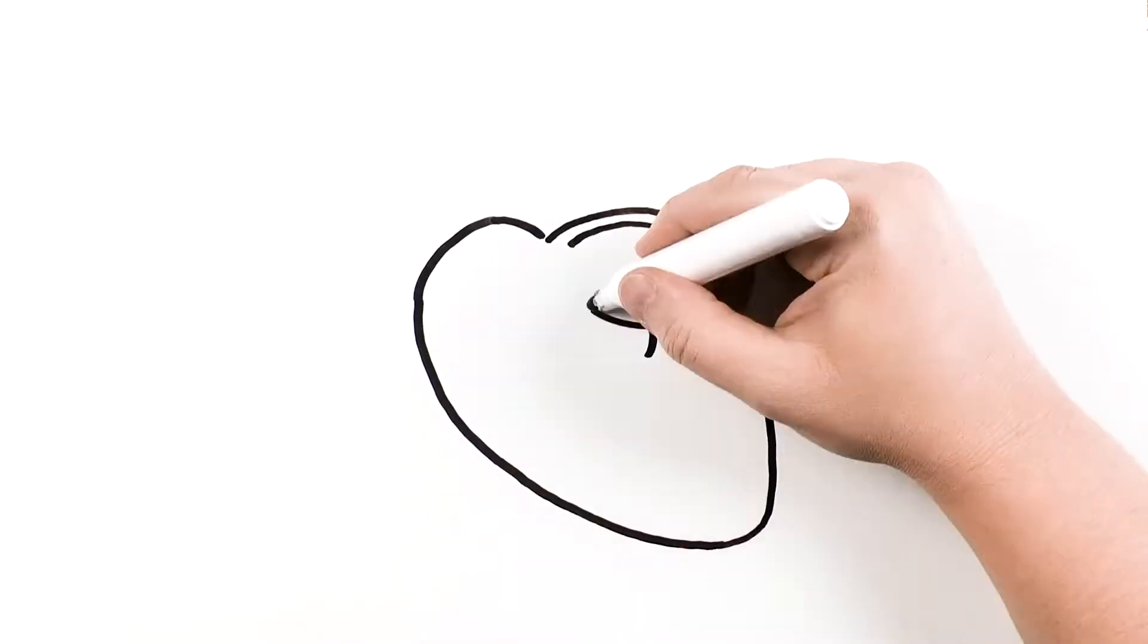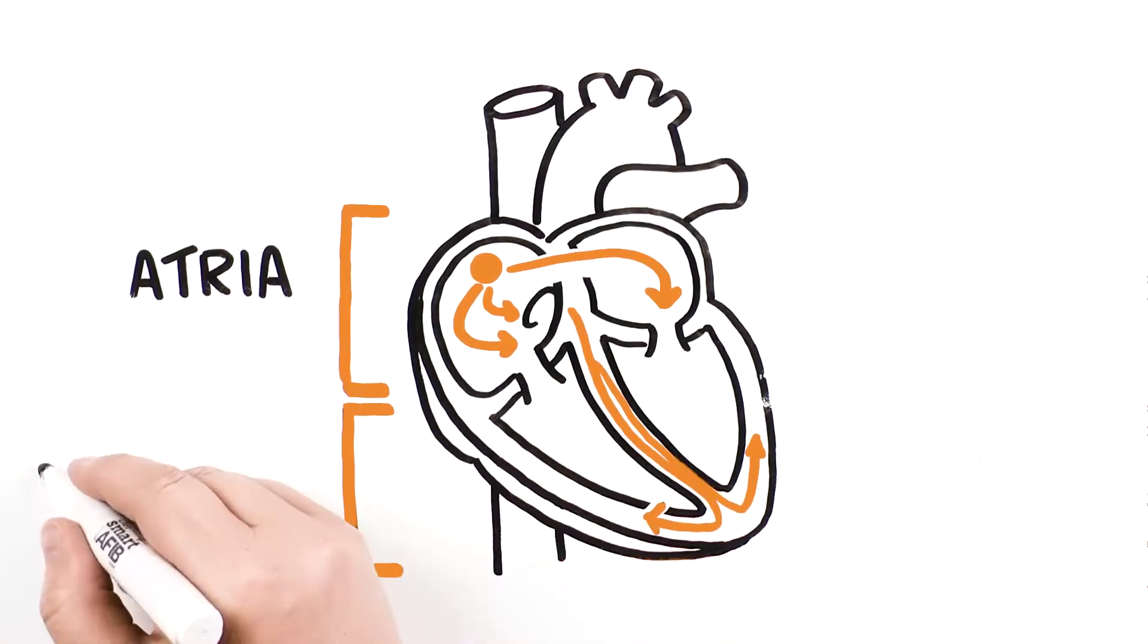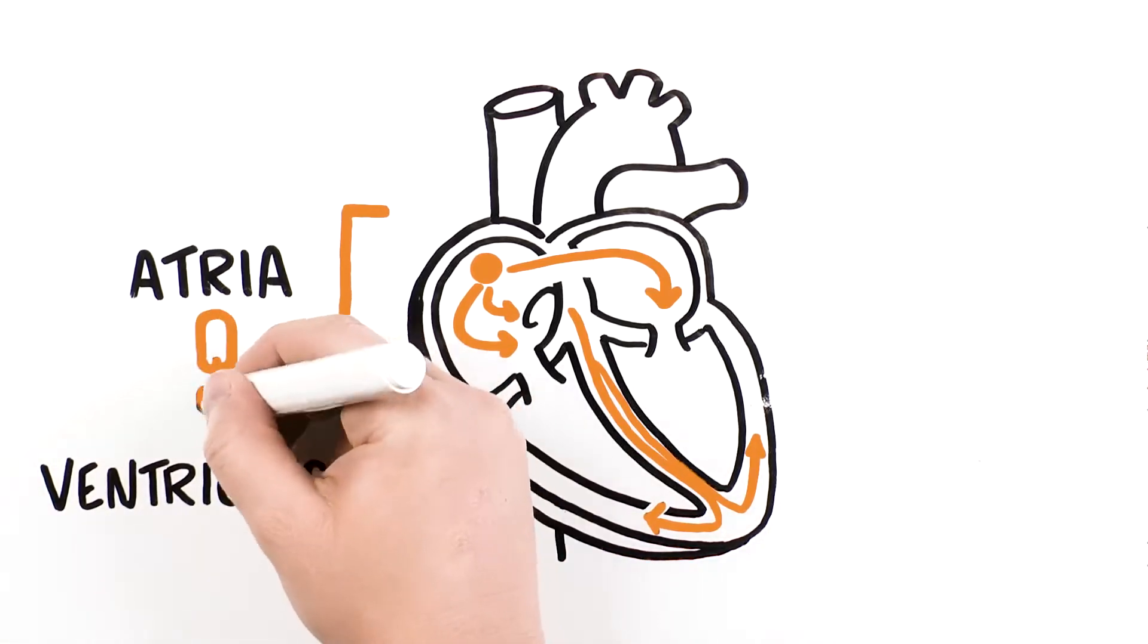Your heart's electrical system ensures the top chambers of your heart, called the atria, and the bottom chambers, called the ventricles, are in sync with one another, resulting in a steady rhythm.